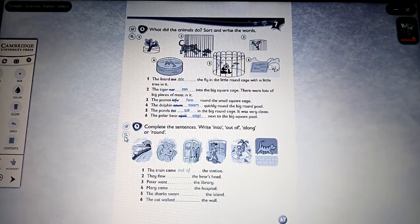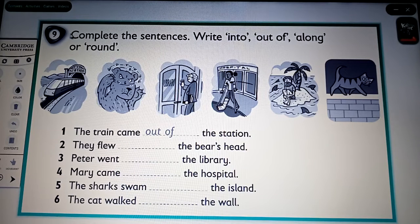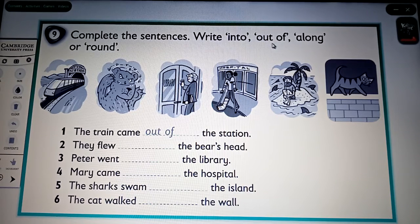Number 9. We will come back to sentences. Write: into, out of, along, or round. Into. What does it mean? Into. It means: içine, içeriye. Okay. Out of. What does it mean? It means: dışına. Along. What does it mean? It means: boyunca. Round. What does it mean? It means: etrafında. Okay.